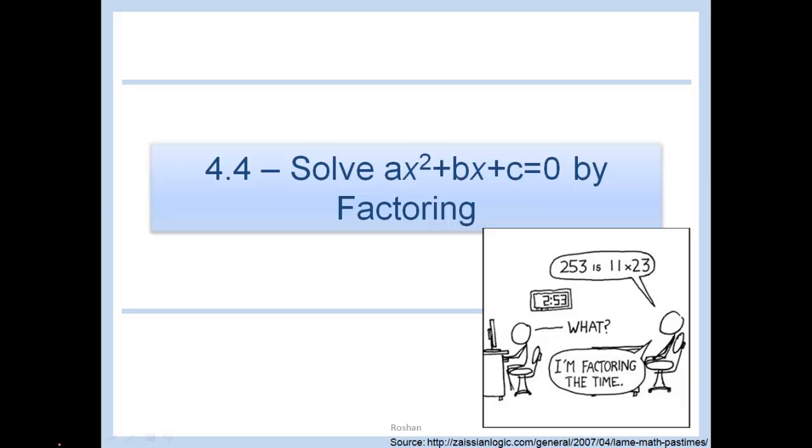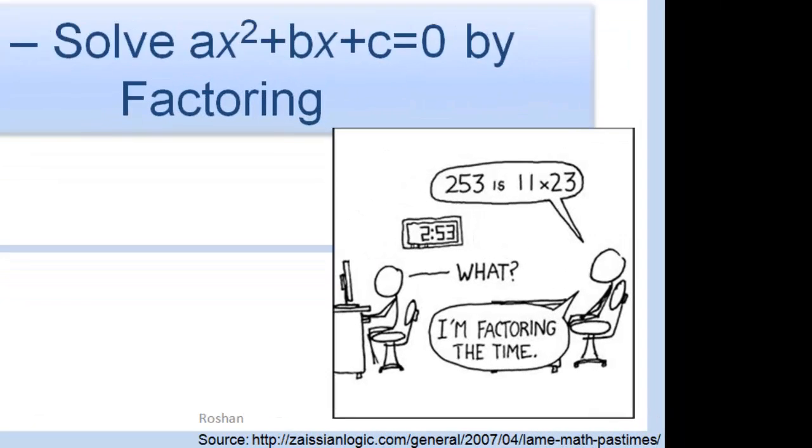Solve ax squared plus bx plus c equals zero by factoring.